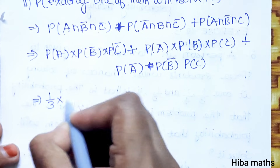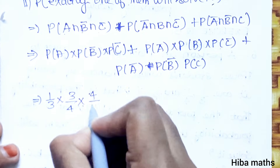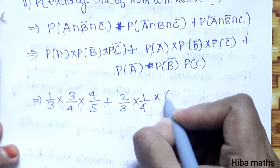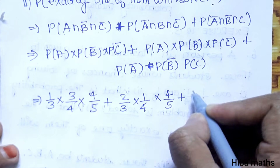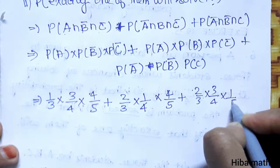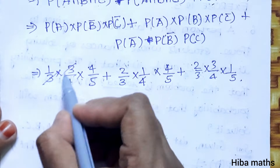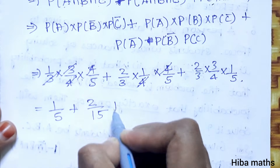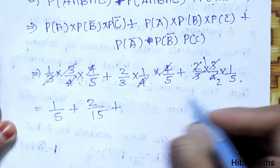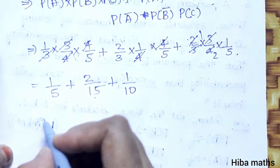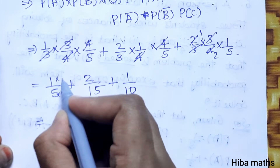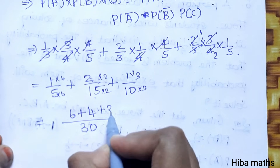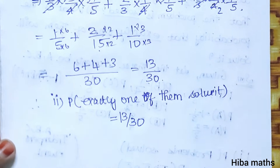That equals: P(A) value 1 by 3, into P(B bar) value 3 by 4, into P(C bar) value 4 by 5, plus P(A bar) value 2 by 3, into P(B) value 1 by 4, into P(C bar) value 4 by 5, plus P(A bar) value 2 by 3, into P(B bar) value 3 by 4, into P(C) value 1 by 5. Cancelling: 3 and 3, 4 and 4 cancel — giving 2 by 15, plus 2 by 10, plus 6 by 30. LCM is 30: giving 4 plus 6 plus 3 = 13 by 30.